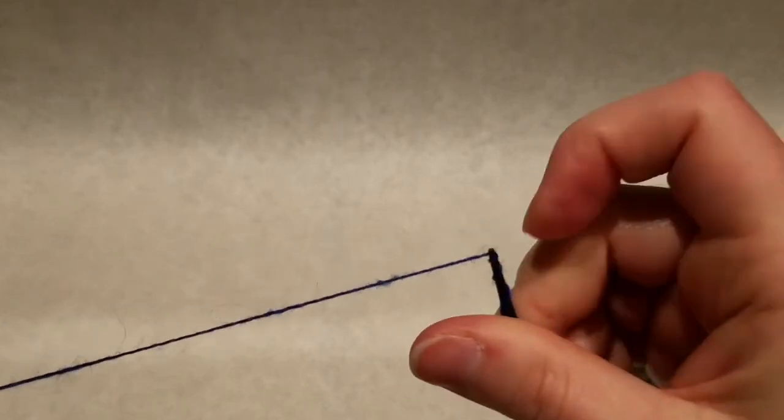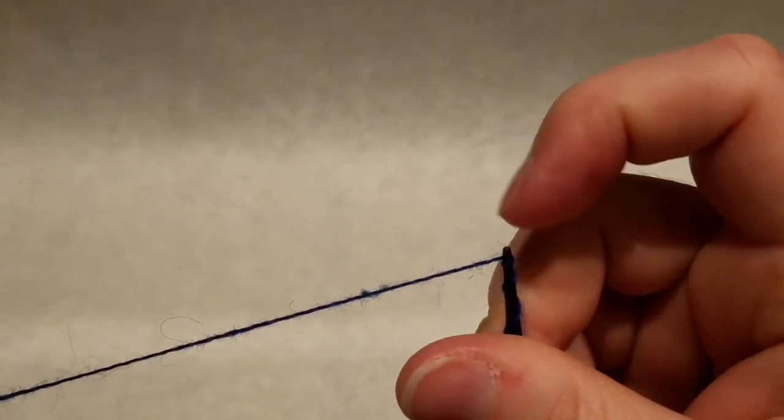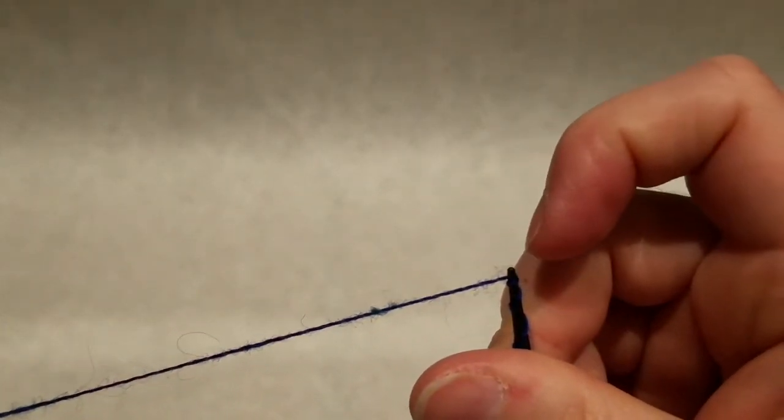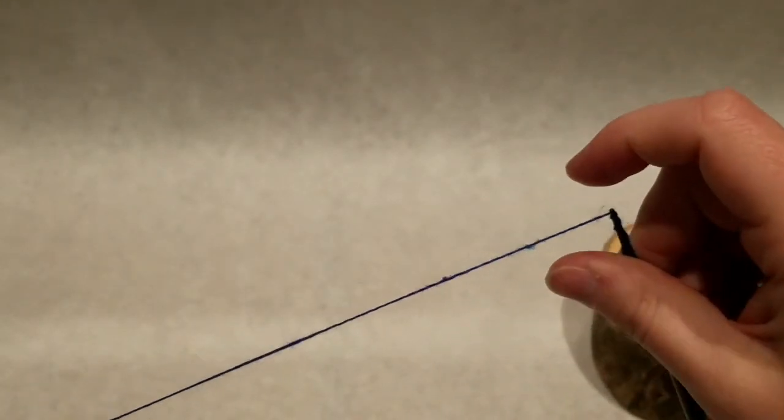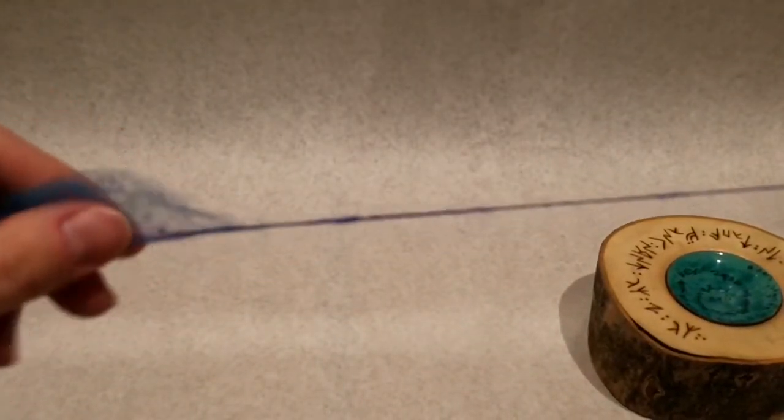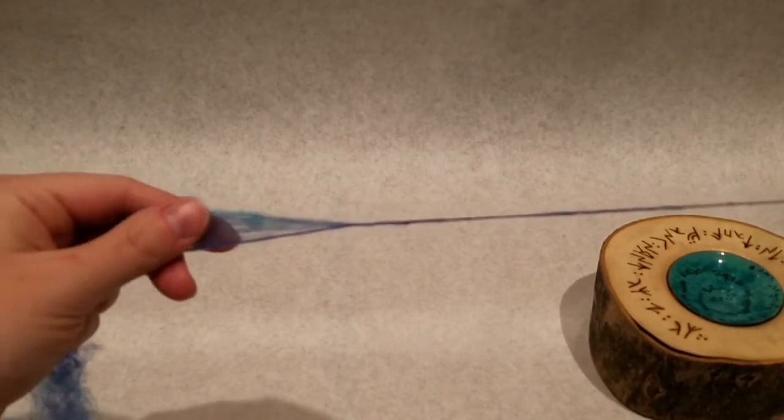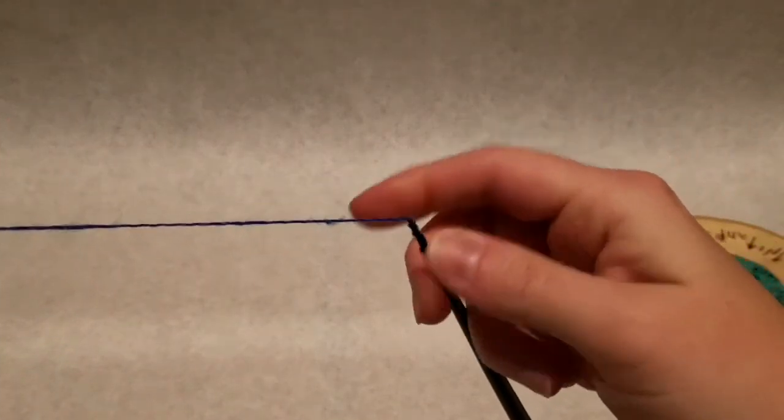You can probably hear the yarn flicking off of the tip, and that's what you want because you want to build up some twist so you can draft out your leader. And we're going to do this a couple more times.